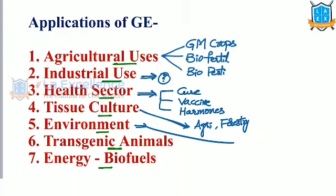In environmental applications, let's say we want to make the land more fertile. Can we use genetic engineering? Can we make a particular plant that gives more nutrition to the land or reduces desertification? So we can say GM crops help in environmental stabilization.